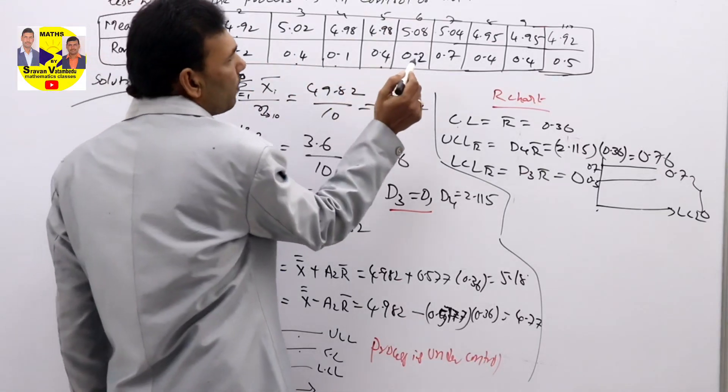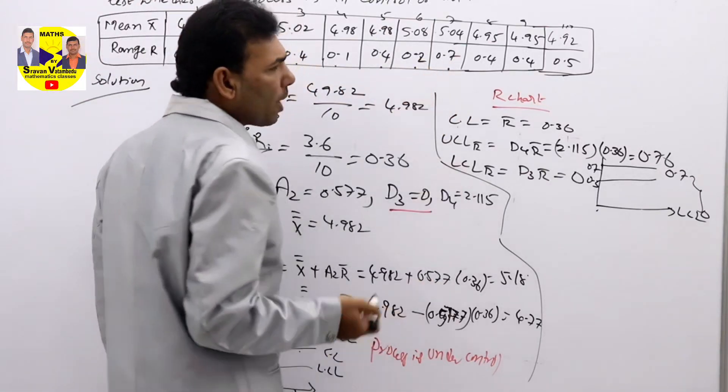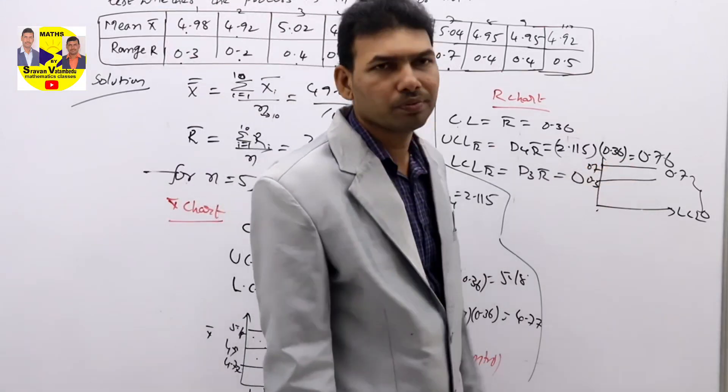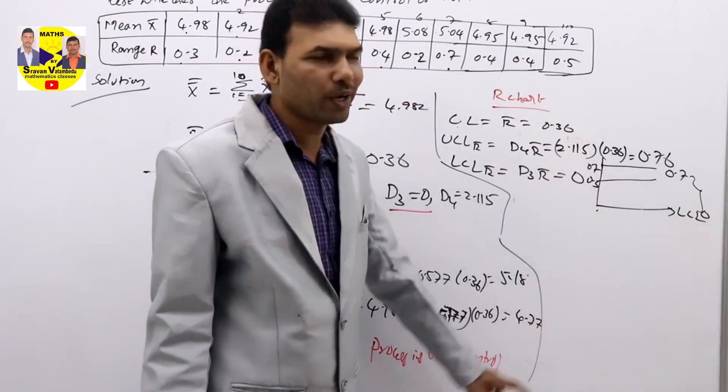0.4, 0.4, 0.5. So all the values are in between UCL R bar and LCL R bar.